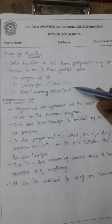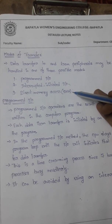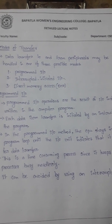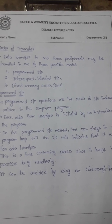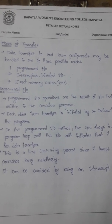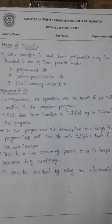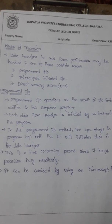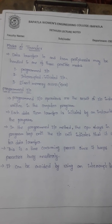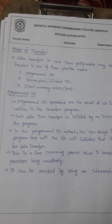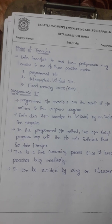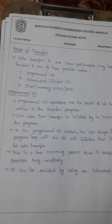Those three modes are: programmed I/O, interrupt-initiated I/O, and direct memory access. In programmed I/O, the I/O operations are the result of I/O instructions written in the computer program. We are accessing the data from the I/O devices in the form of programs — we are writing code to access data from the I/O devices. Each data item is initiated by an instruction in the program.